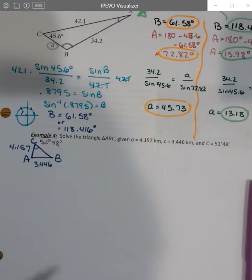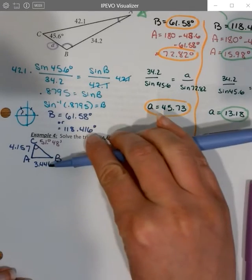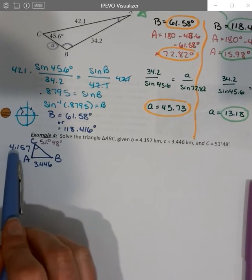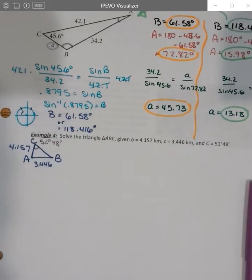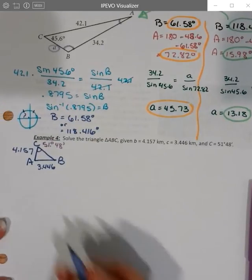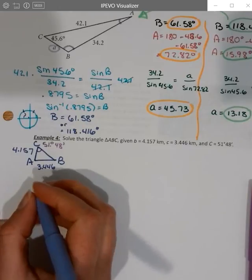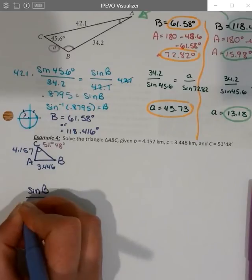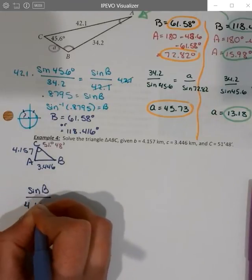Okay, so we're going to start by using the pair that we have of C, C, and then we're going to try to find, since we have a side for B, angle B. So that's the first thing that we're going to have to do. Okay, so since I want to know the angle, I'm going to put the angle on top. So we'll have sine of B over little b, that's 4.157.